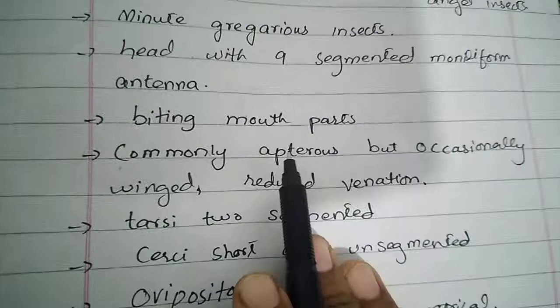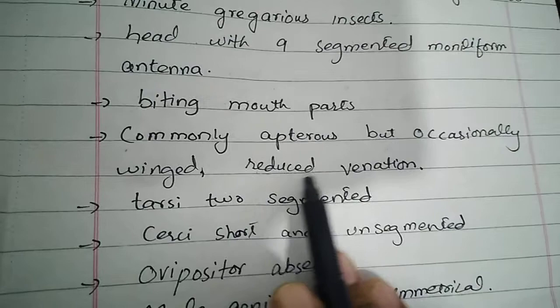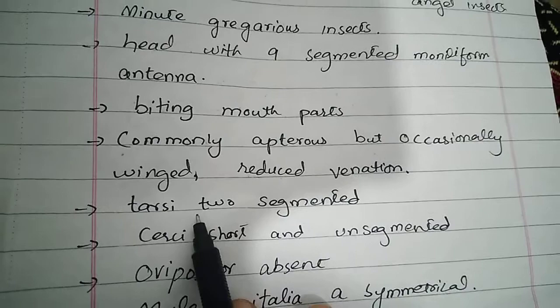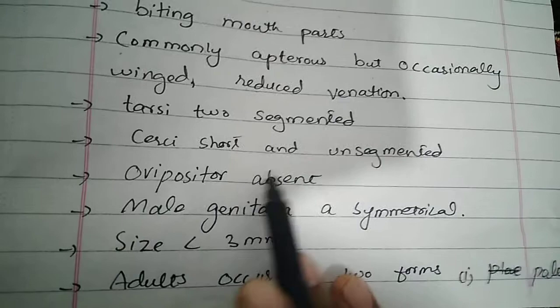They are commonly apterous, meaning they are without wings, but occasionally winged. If they are winged, they have reduced venation. Pigmentation is reduced. Tarsi are two-segmented. Cerci are short and unsegmented. Ovipositor is absent. Males in the order are asymmetrical.